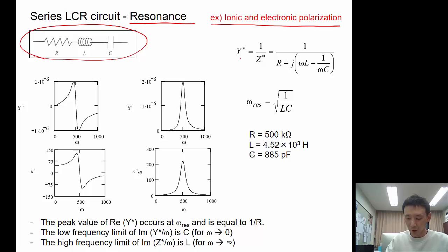The equivalent admittance will be expressed as in here, if you derive it using Kirchhoff's loop laws. Resonant frequency will be like this. So then you can plot Y, the real value of Y* and the imaginary value of Y* over the frequency. You can also get kappa prime and kappa double prime. Peak value of the real admittance occurs at the resonance frequency and is equal to 1/R. The low frequency limit in the imaginary value is C. The high frequency limit in the imaginary value, C over omega, is L.